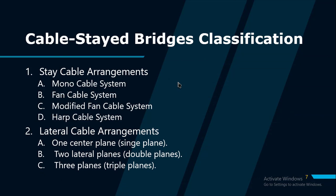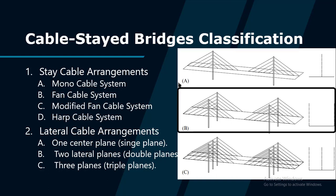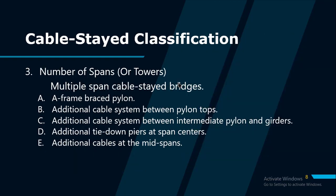The second consideration is the lateral cable arrangement. In the lateral direction, the cable system can be arranged as one single plane above the center line, two planes either vertical or inclined at the edges of the girder, or three planes connected to the center line and both edges of the girder. The third consideration is the number of spans or towers. Cable-stayed bridges can be designed as single span, two spans, three spans, or multiple spans; however, bridges having two or three cable-stayed spans are more widely used, because the cable stays and anchor pier are important for the stability of the pylon.